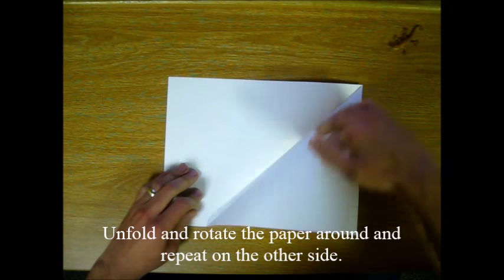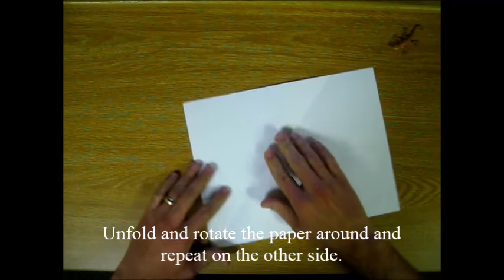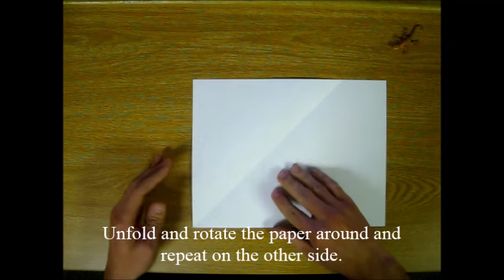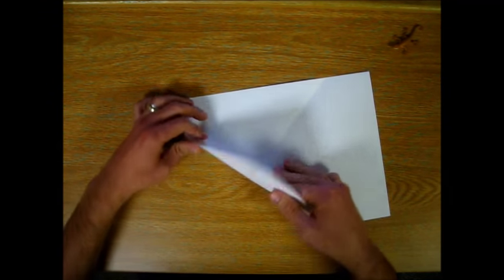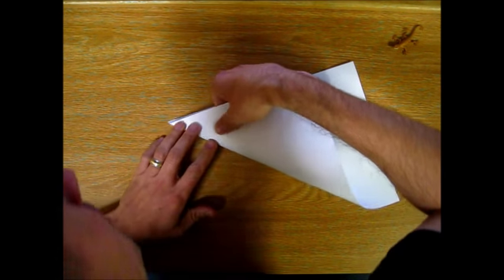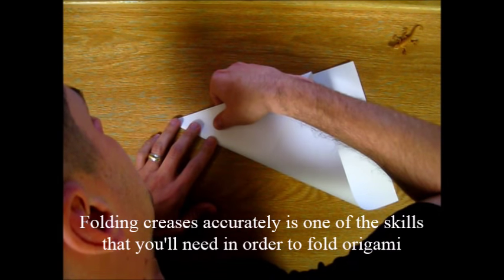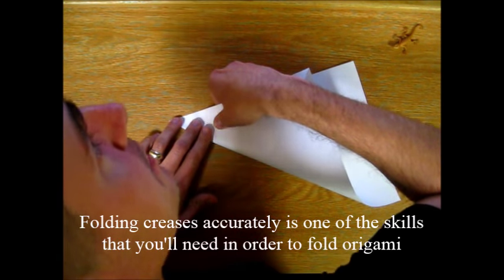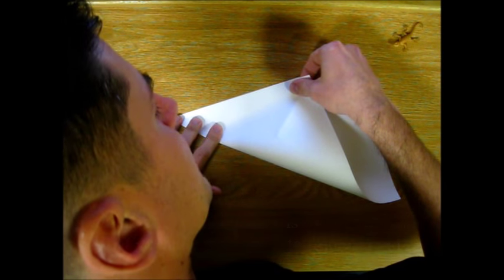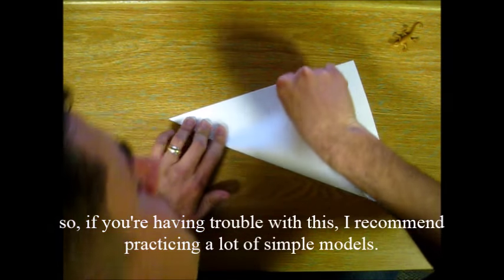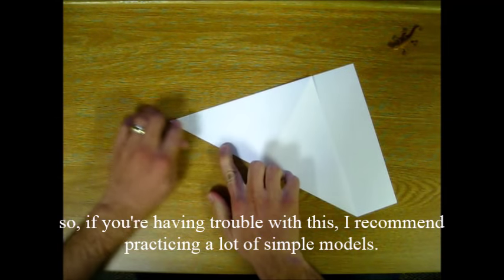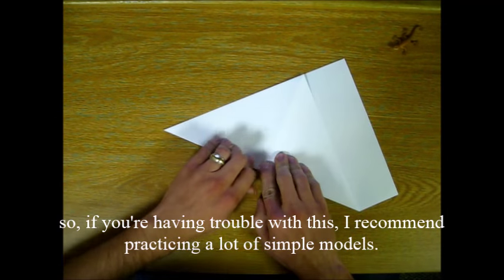Unfold and rotate the paper around and repeat on the other side. Folding creases accurately is one of the skills that you'll need in order to fold origami. So if you're having trouble with this I recommend practicing a lot of simple models.